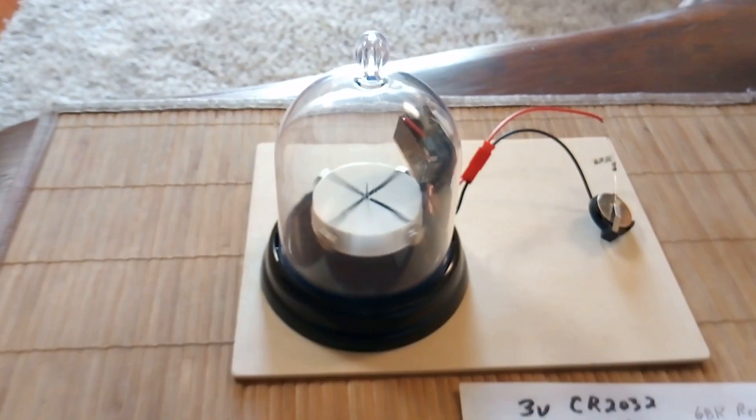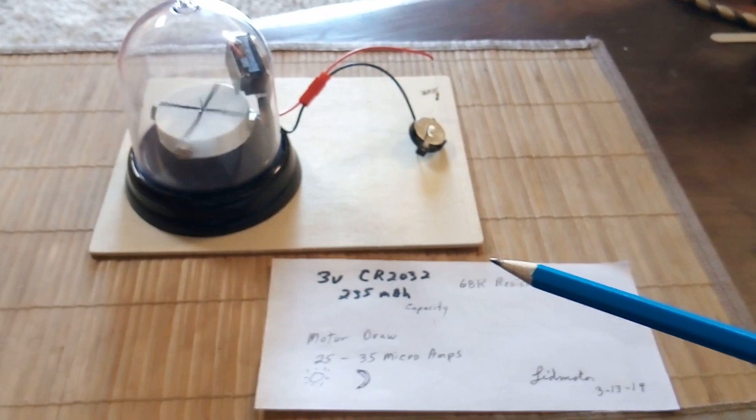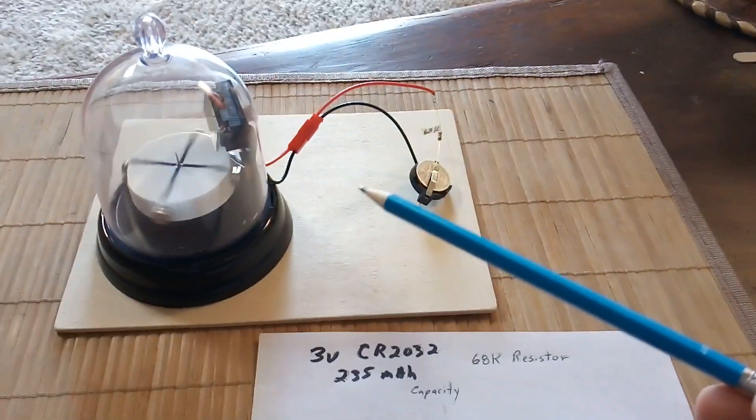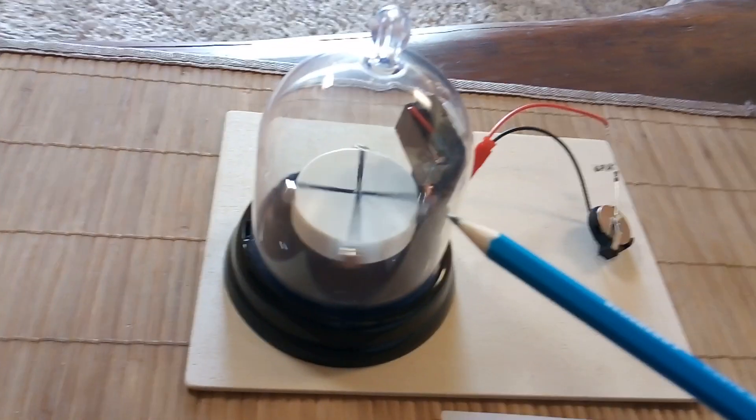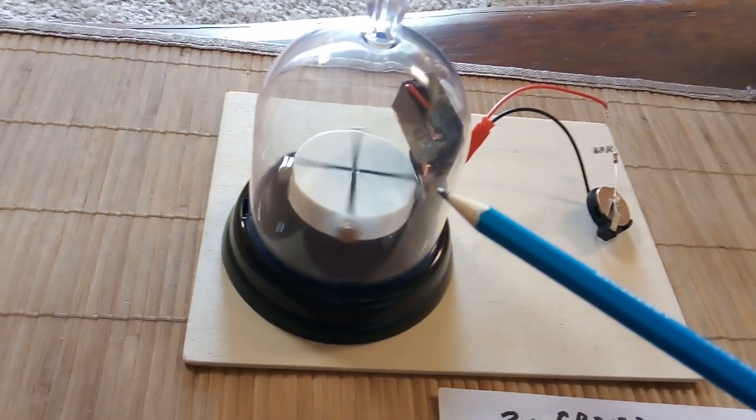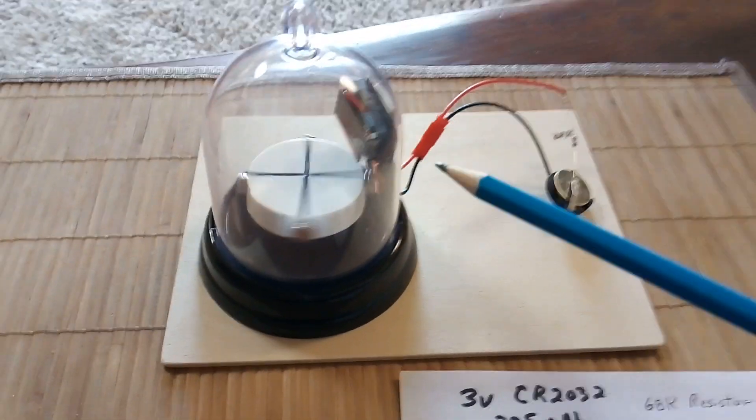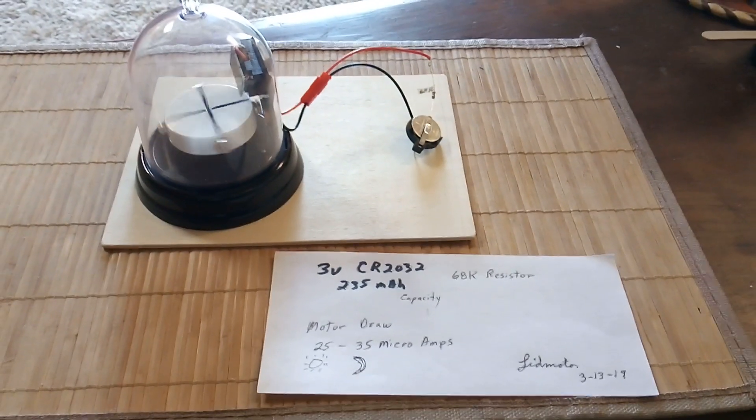This is following granddad's idea of just putting a small button cell on one of these solar waver drive units. Because the amp draw is so low on it, he's not even using a solar panel - he's just got the battery hooked right up to it, and they run for a very long time. So we'll just have to take a look and see how this runs.